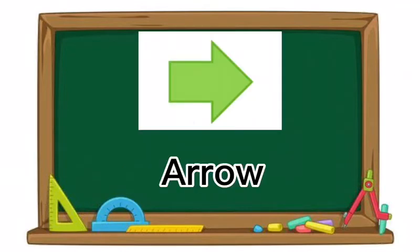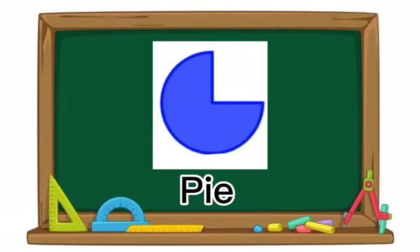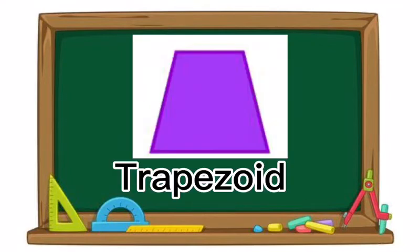Arrow. This is an arrow. Diamond. This is a diamond. Pie. This is a pie. Trapezoid. This is a trapezoid.